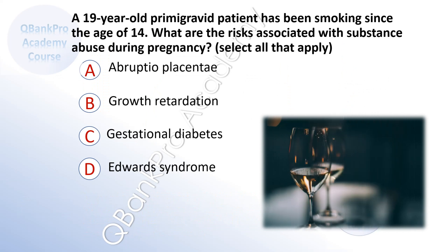A 19-year-old primigravid patient has been smoking since the age of 14. What are the risks associated with substance abuse during pregnancy? A. Abruptio placenta. B. Growth retardation. C. Gestational diabetes. D. Edwards syndrome.